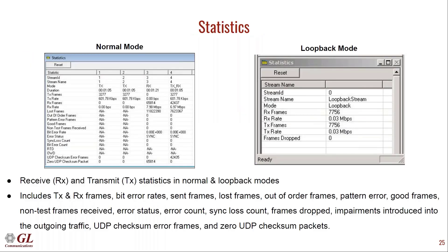This shows the actual per-stream statistics. If four streams are defined, statistics are shown for each. The mode can be transmit only or TX/RX for full duplex. Statistics include TX frames, TX rate, RX frames, RX rate, lost packets, and lost frames. If none are observed, they are shown as not applicable.